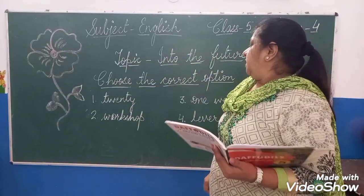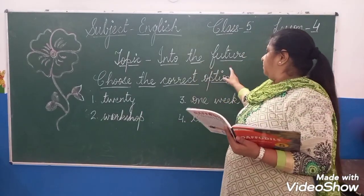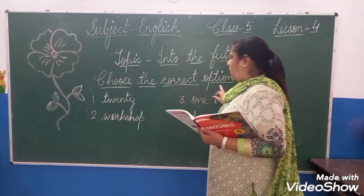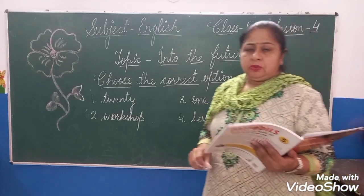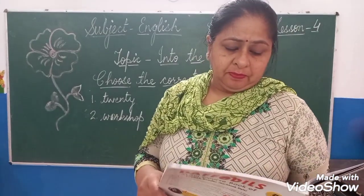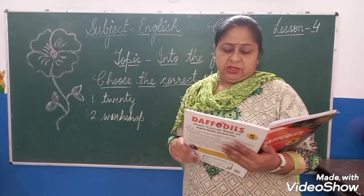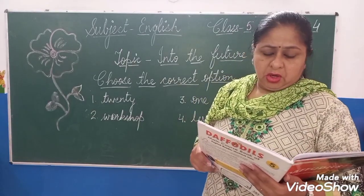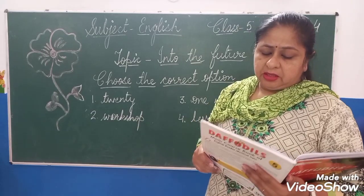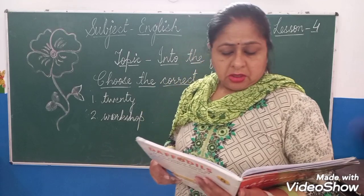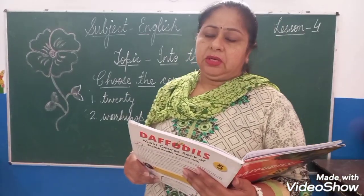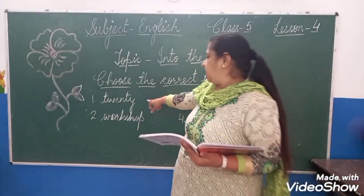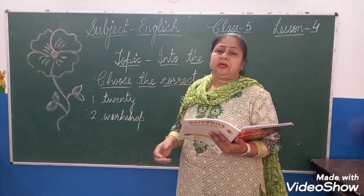Yes children, now we will do the exercise part of lesson number 4, 'Into the Future.' First we will do 'Choose the Correct Option.' Number 1: The actual machine was dash times larger than the model of the time machine the narrator had shown earlier. A: 10, B: 15, C: 20. Yes, 20 is the right answer — 20 times bigger than the machine.